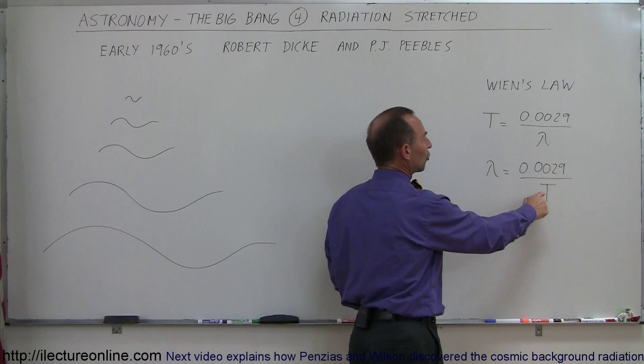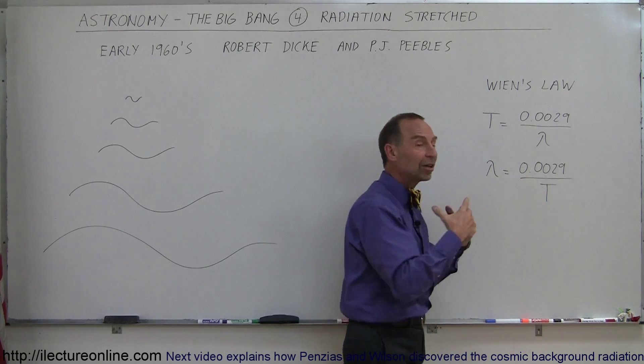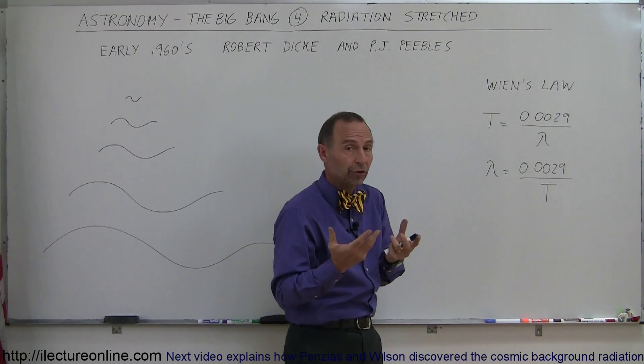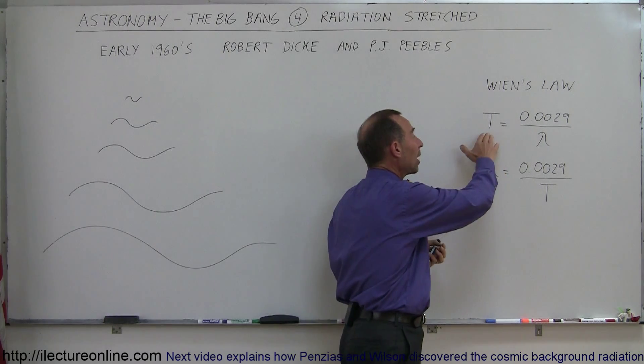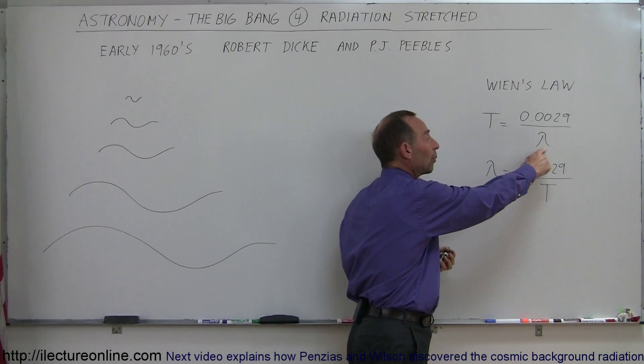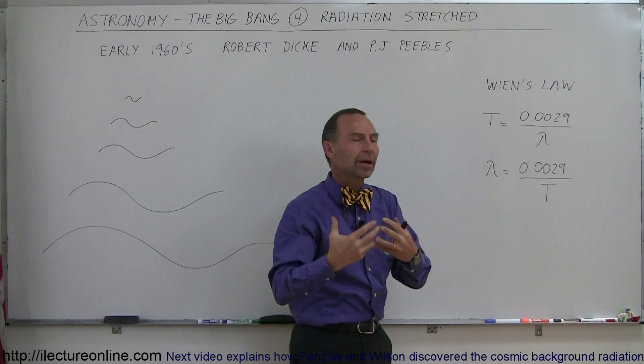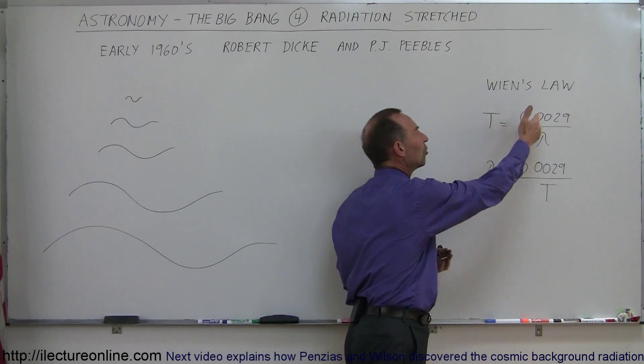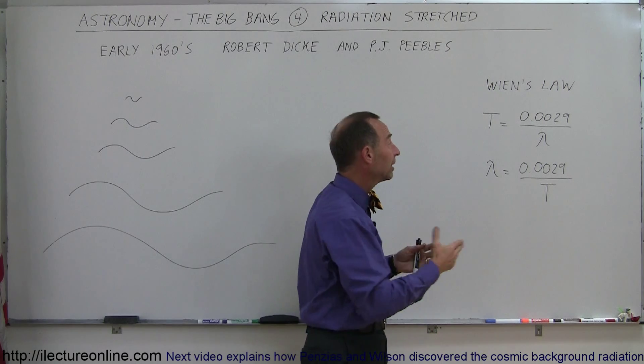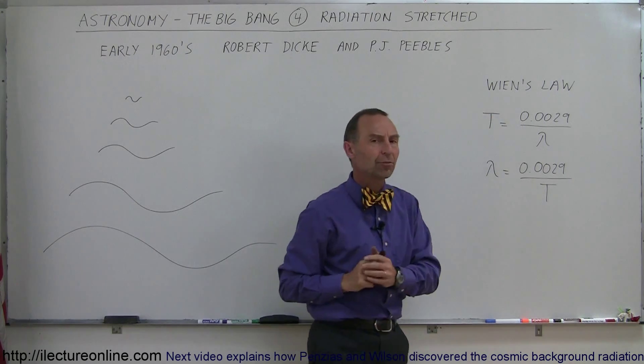And so an object that is at a certain temperature will put out radiation at a certain wavelength, or vice versa. If you want to know the temperature of an object, we can simply find out what the radiation emitted by the object is, divide that into 0.0029, which is a constant that was discovered, and out pops the temperature of the object.